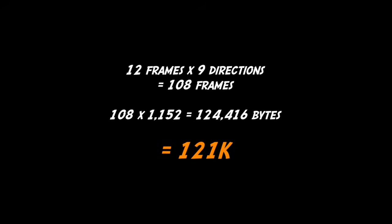So let's have a look at exactly how the graphic is displayed on the screen to see if we can find some savings there. The Sega Genesis can draw sprites in any size up to 4 characters square. So for this frame of animation, it uses 4 sprites like this.